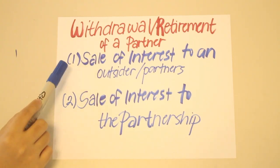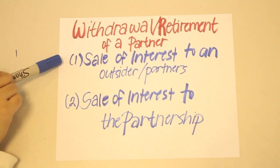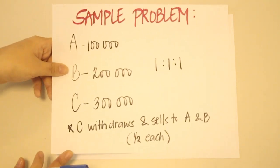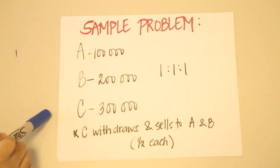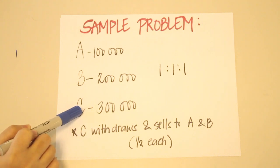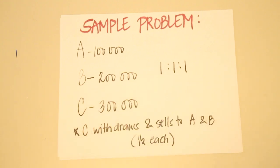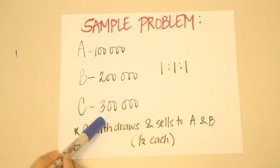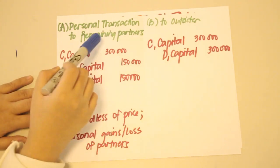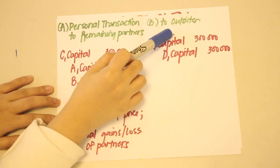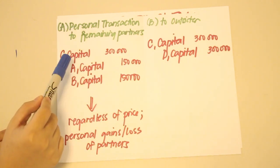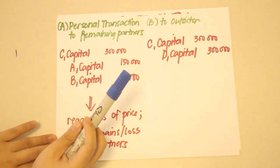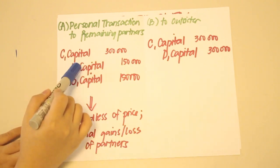When a partner withdraws or retires from the partnership, two possible scenarios arise: either he sells his interest to outsiders or to the remaining partners, or the partnership purchases his interest. For the first scenario — assuming A, B, and C have capital balances of 100,000, 200,000, and 300,000 respectively with a P&L ratio of 1:1:1 — C withdraws and sells his interest to A and B, who split the capital balance equally. To record this, we debit C capital for 300,000 and credit A capital and B capital for 150,000 each.